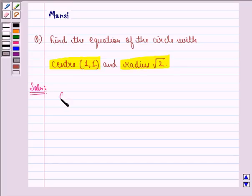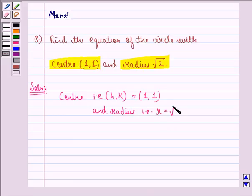Now what is given to us is the center, that is the point (h,k) equal to (1,1), that is h is equal to 1 and k equals to 1, and the radius that is r equal to root 2.